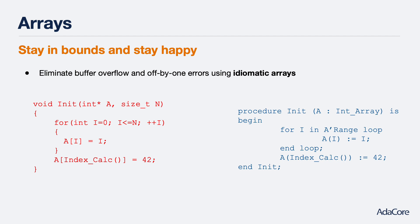Let's look at an example. The C code on the left compiles without a problem, but even in the sunny-day scenario where the size parameter n is actually the size of array a, the subtle off-by-one error in the for loop's predicate ensures that a buffer overflow occurs and memory is corrupted. In contrast, in Ada, looping over the array using the array's range attribute ensures that no out-of-bounds access can occur. If an index was computed algorithmically and the result was out-of-bounds, an automatically inserted compiler runtime check would catch this error and put it on the developer's radar sooner.